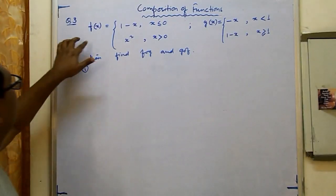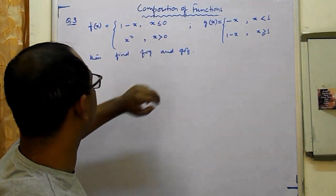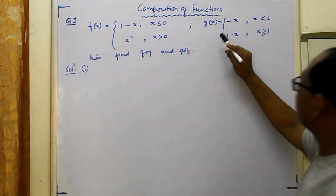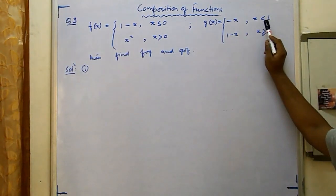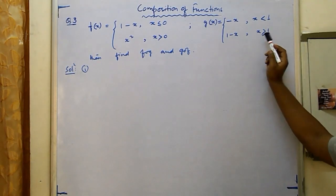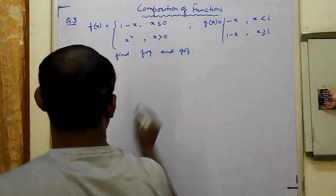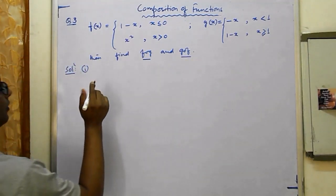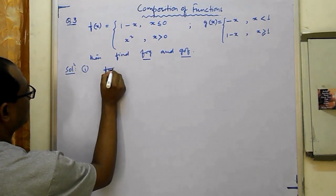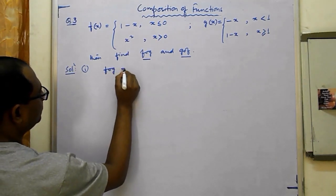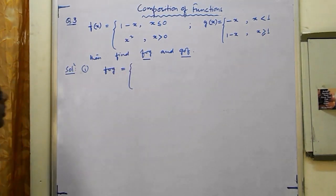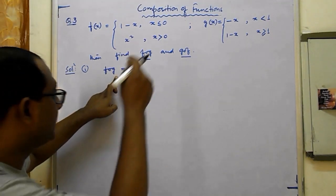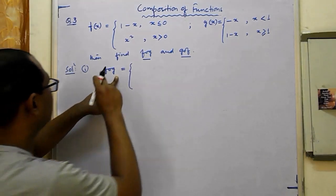Now for a piecewise example: f(x) = 1 − x if x ≤ 0, and x² if x > 0. The second function g(x) = −x if x < 1, and 1 − x if x ≥ 1. We have to find f∘g. So f of g(x) means g is the first function. g(x) undergoes f, giving 1 − g(x) if g(x) ≤ 0, or g(x)² if g(x) > 0.